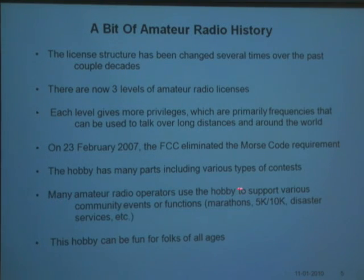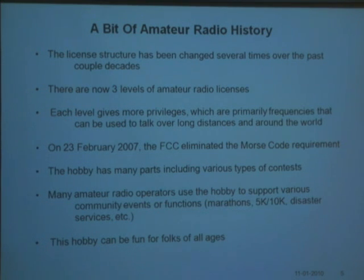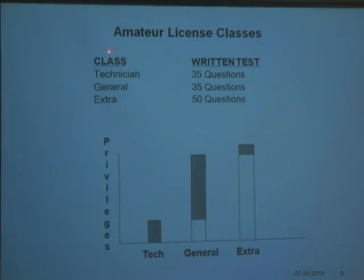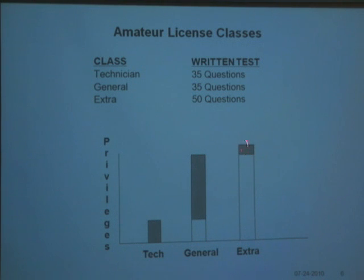Many parts of the hobby are used for various community events, like radio communications for marathons, or 5K or 10K races, or disaster services, and a bunch of other stuff. There are three classes of license: Technician, General, and Expert. The written test you're going to take is 35 questions. You get a certain amount of privileges with the Technician; when you get the General, you get more privileges; and when you get the Expert, there are a few more. But if you just want to work locally and talk to people locally, Technician works fine.